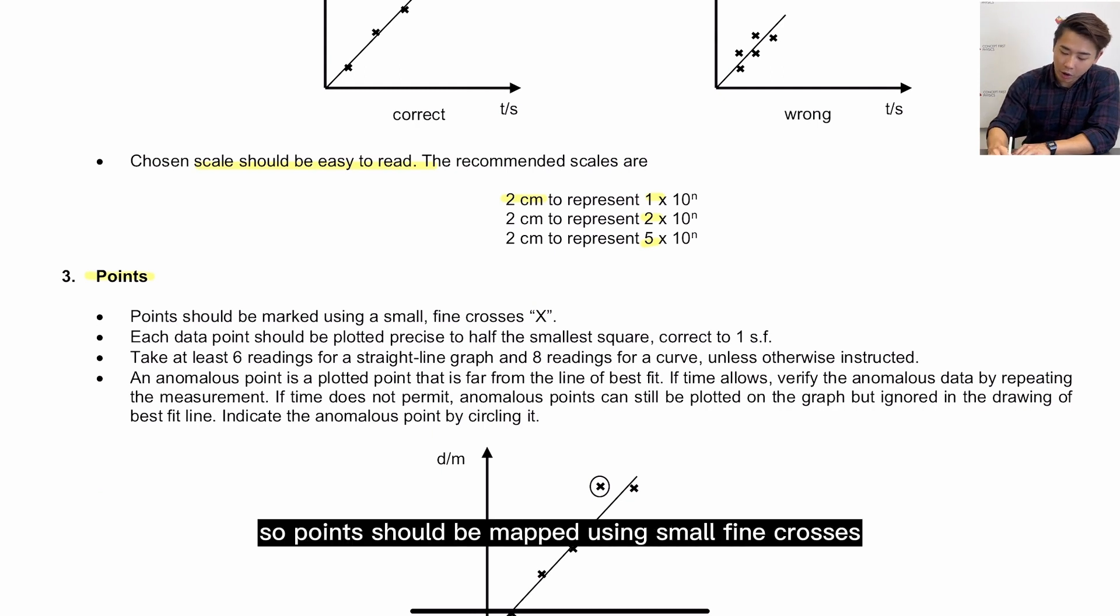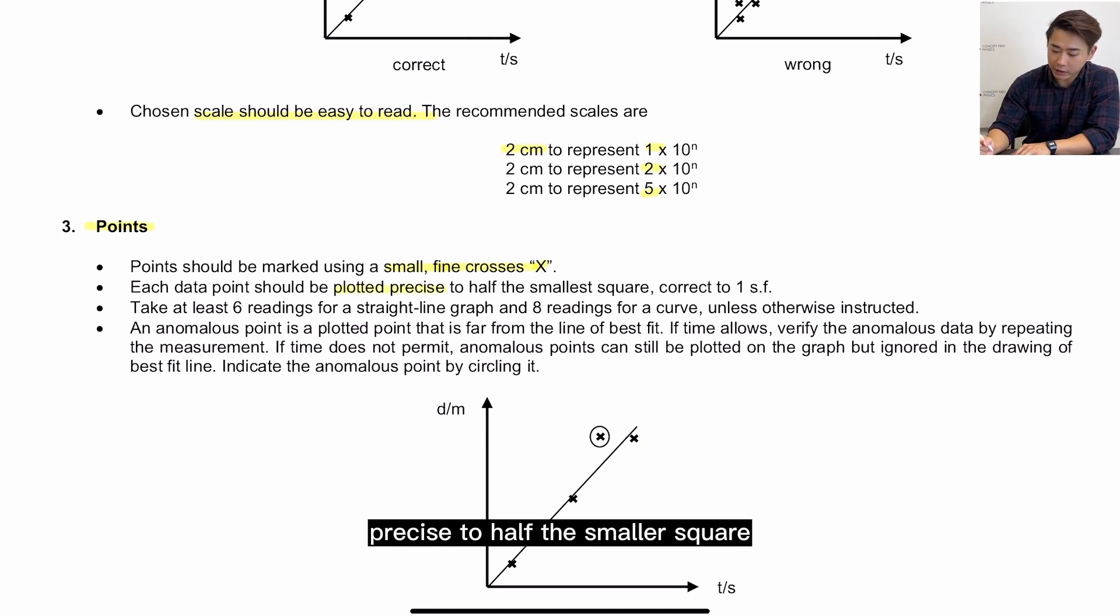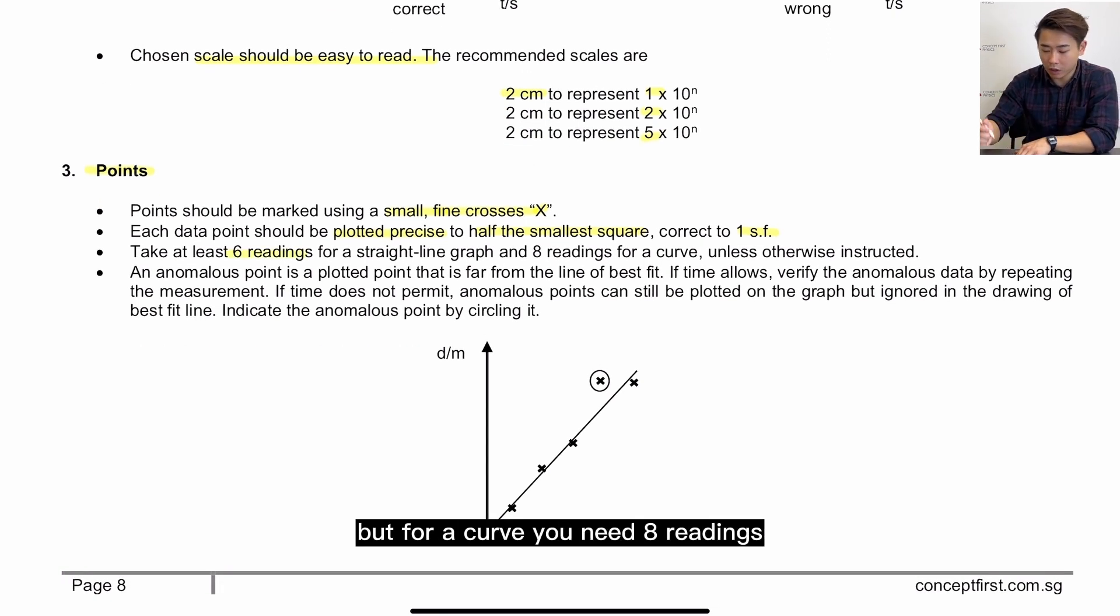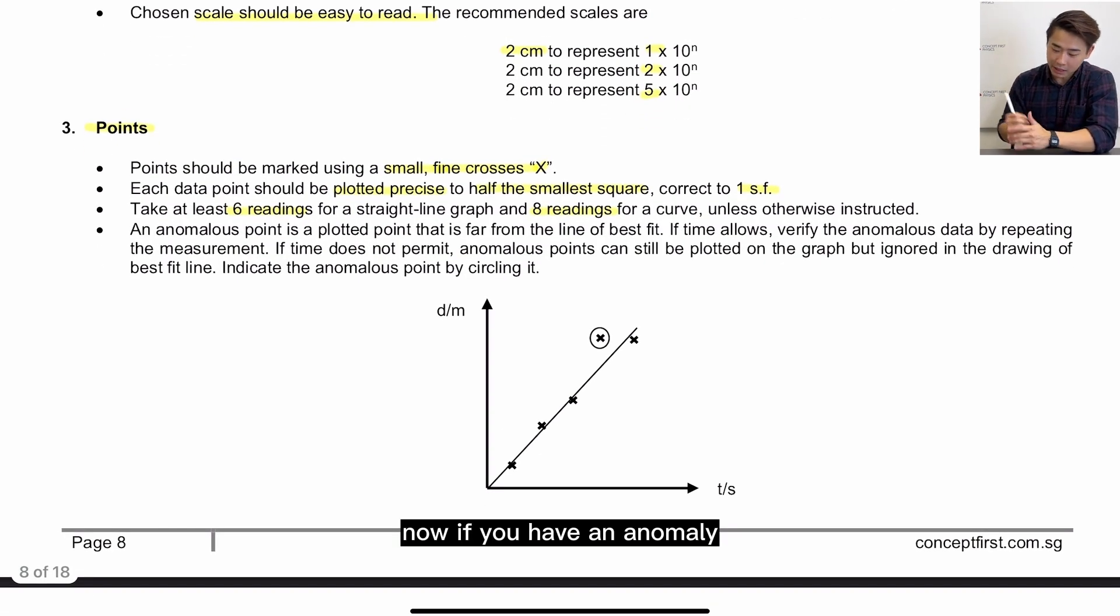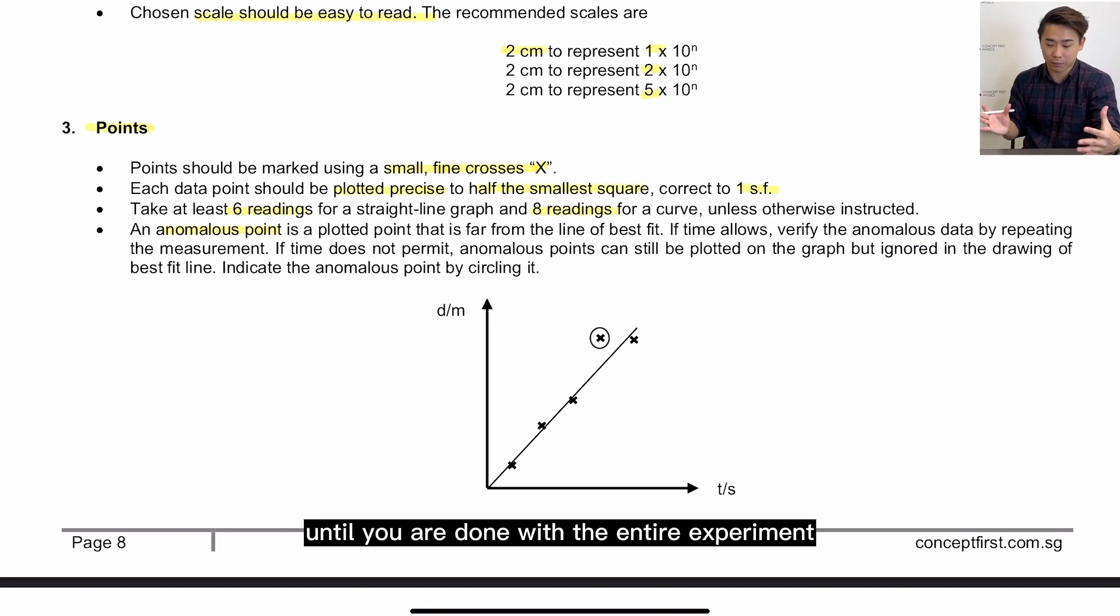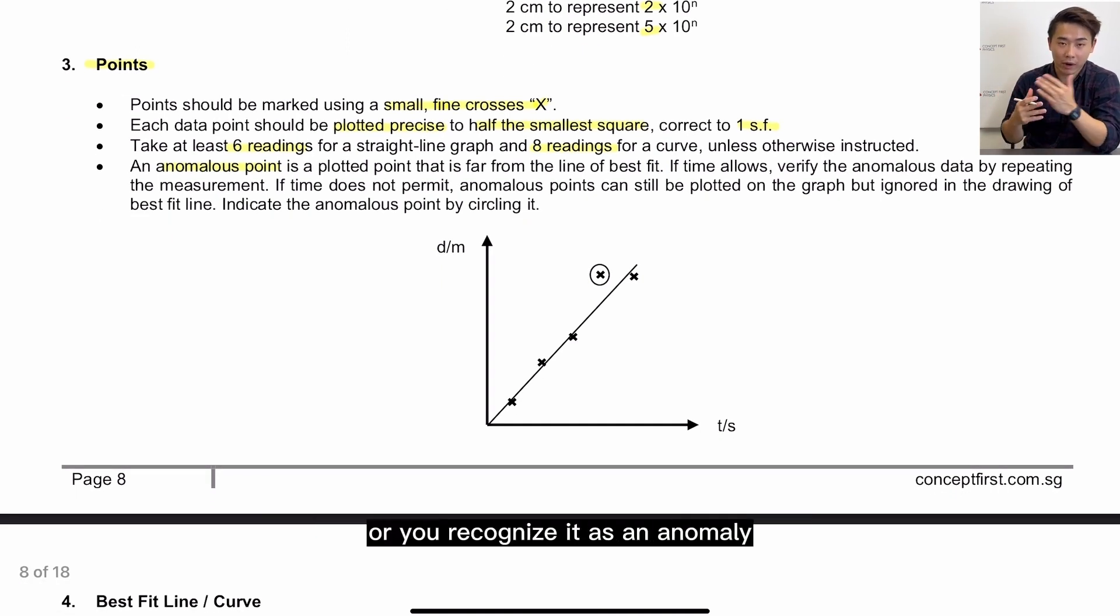Number 3 is your points. So points should be marked using small fine crosses. Each data point again should be plotted precise to half the smallest square, correct to 1SF. Now for a straight line graph you will need at least 6 readings, but for a curve you need 8 readings, unless you are otherwise instructed. Now if you have an anomaly, which is the point as an outlier, what you can do is actually to repeat the experiment. So our advice is never to dismantle your setup until you are done with the entire experiment. This way you can quickly take a new reading. However, if after taking new readings you find that you still have an anomaly, what you can do is to circle that point, and that means you are asking the examiner to sort of ignore it or you recognize it as an anomaly.